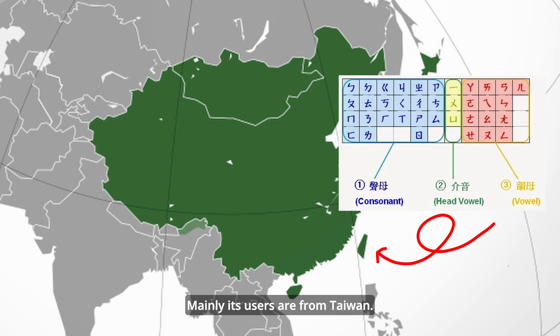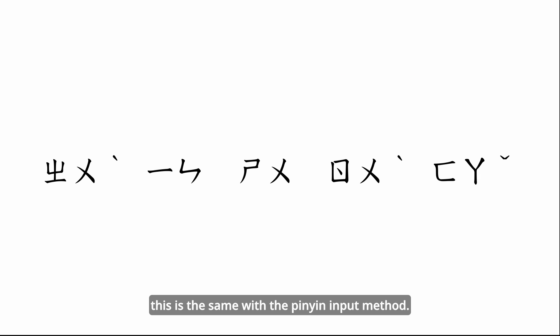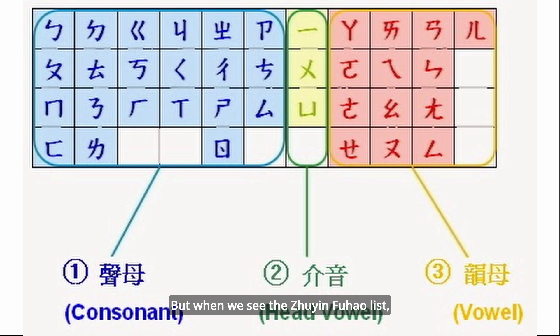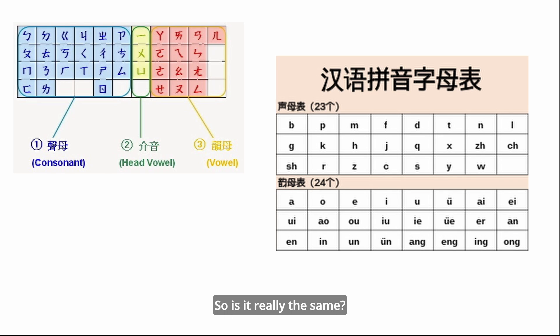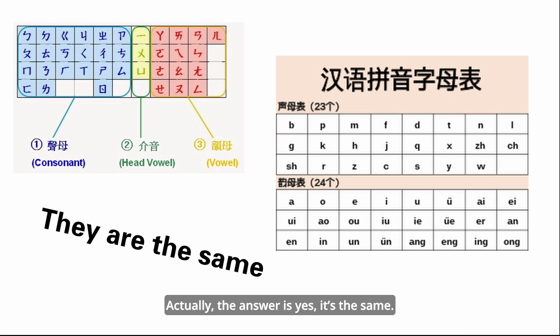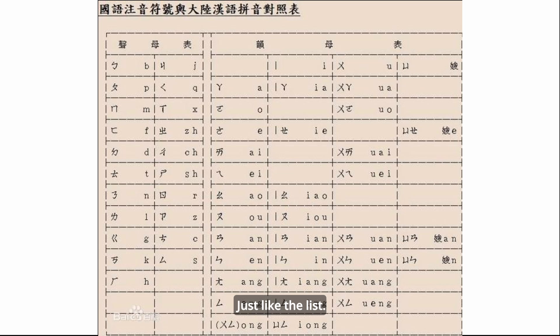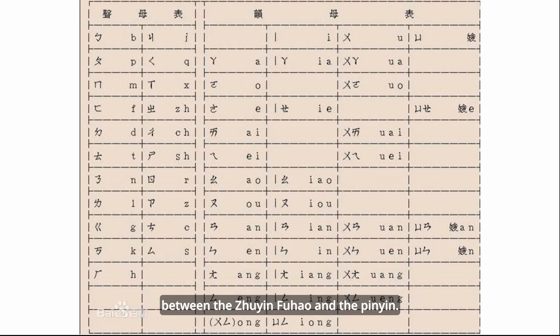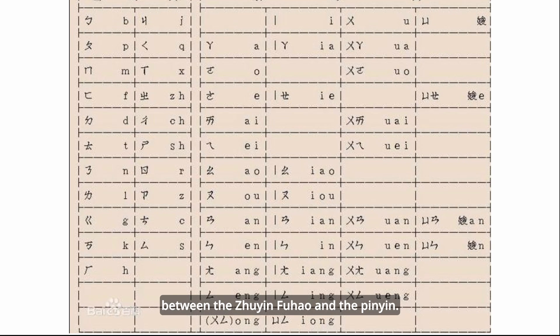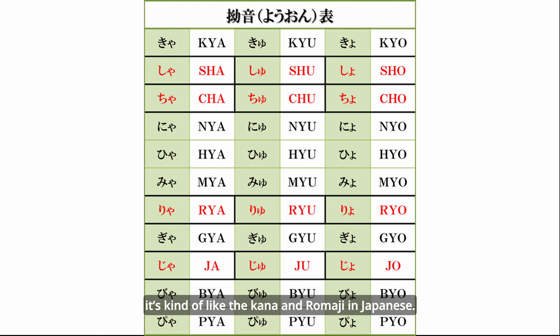Mainly its users are from Taiwan. In fact, this is the same with the pinyin input method, but when we see the Zhuyin fuhao list, it's totally different from the pinyin alphabet. Is this really the same? Actually, the answer is yes, it's the same. We can see the one-to-one correspondence between the Zhuyin fuhao and pinyin. It's kind of like the kana and romaji in Japanese.